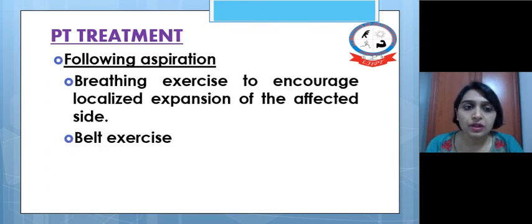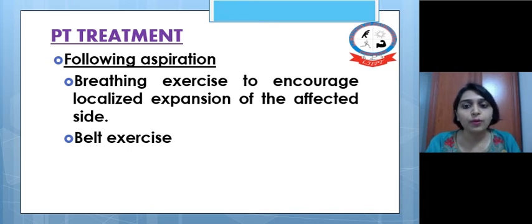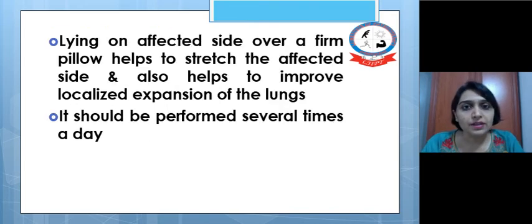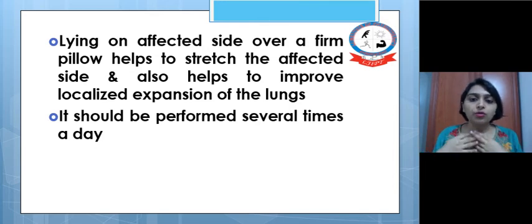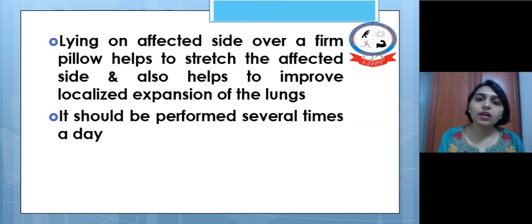Physiotherapy treatment depends on which type of medical treatment has been undertaken. Following aspiration, breathing exercises should be given to encourage localized expansion on the affected side. Belt exercises can also be used, applying compression during inspiration and assistance during expiration. The patient can also be made to lie on the affected side over a foam pillow, which helps to stretch that side and improve localized lung expansion. For a left-sided effusion, the patient would lie on the left side over the pillow to both stretch the area and promote localized lung expansion.